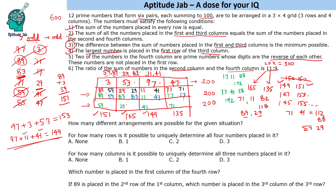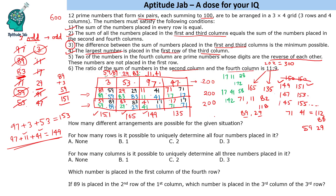Filling in all four cases: in each, 17 and 71 swap positions in the fourth column, and the other numbers adjust accordingly. So the answer to the first question — how many different arrangements are possible — is four.